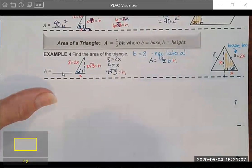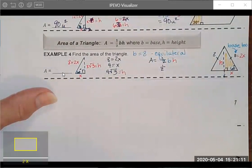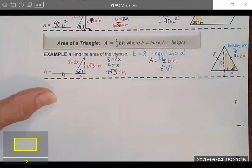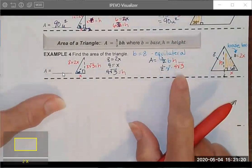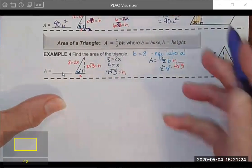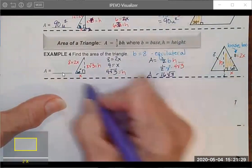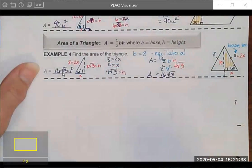My area is going to be 1 half the base which we said was 8 because all sides are equal and my height was 4 square root 3. You can do this calculation any way you choose. What you should end up with is 16 square root 3 units for your area. And I'm going to remember that it's units squared because we're talking about a two-dimensional object. I did better on that one.